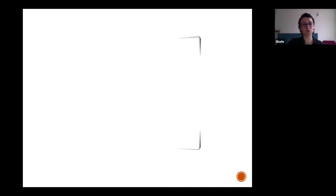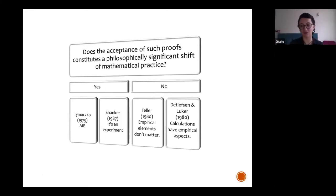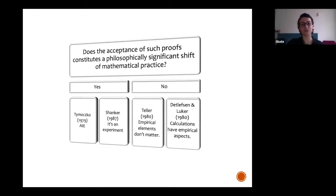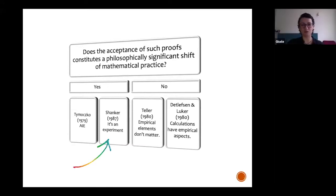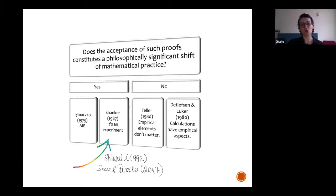The reason I took a Wittgensteinian perspective is that Wittgenstein was introduced into the debate surrounding the four-color theorem proof, especially by British philosopher Stuart Shanker. Some of Wittgenstein's insights into philosophy of mathematics were integrated into the debate in a very curious position defended by Shanker — the position that the four-color theorem proof is not a proof, but an experiment. He said that based on supposedly Wittgensteinian ideas.